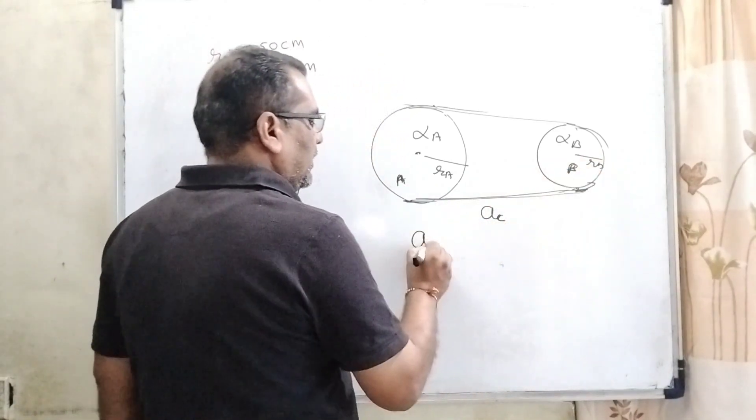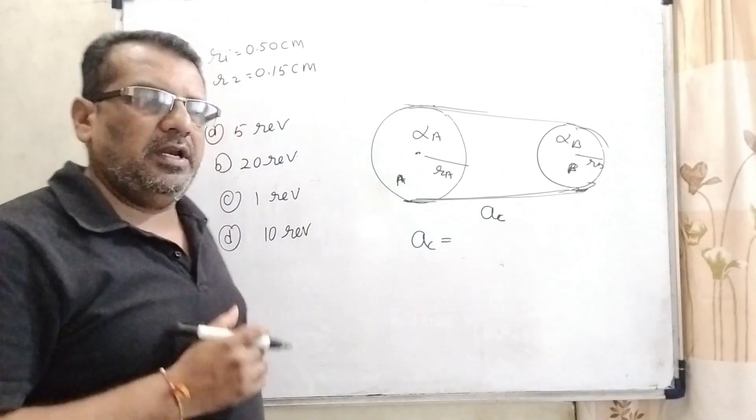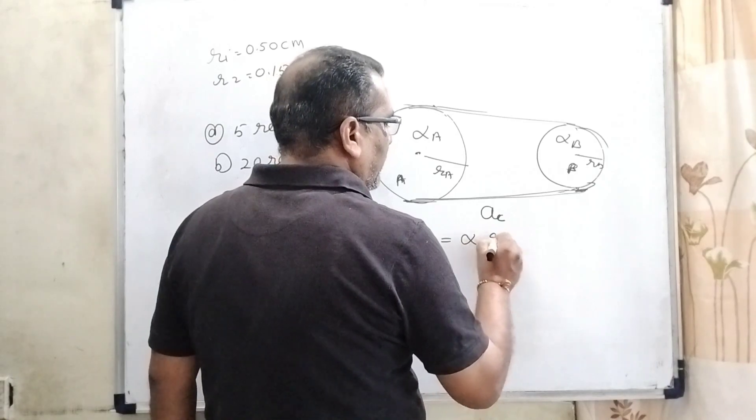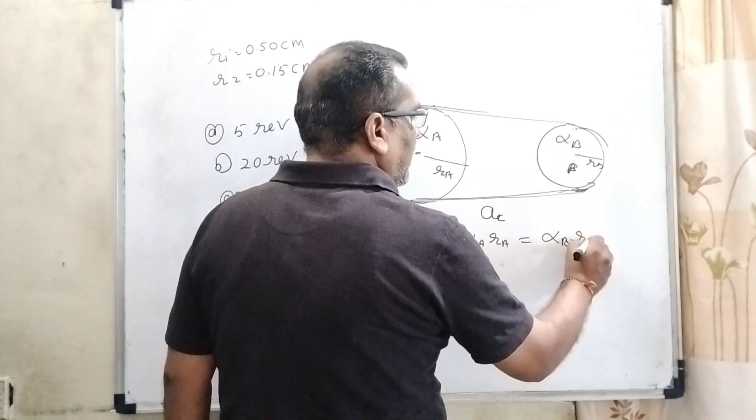So, therefore, you can see that linear acceleration relation, what is the relation between the linear acceleration and angular acceleration? a equals alpha A times RA and it is also equal to alpha B times RB.